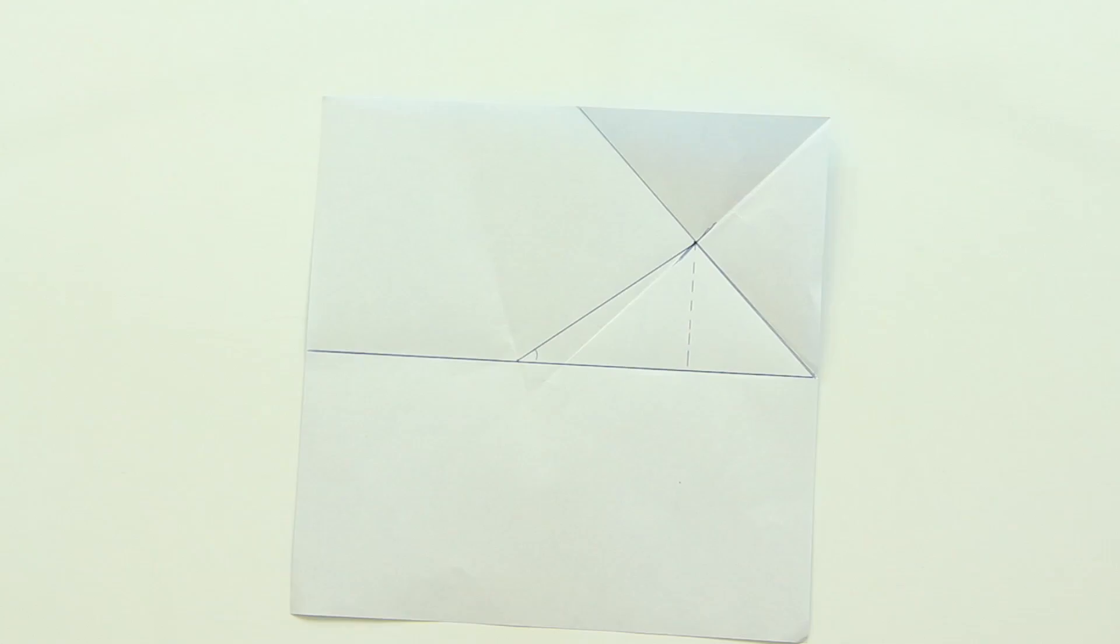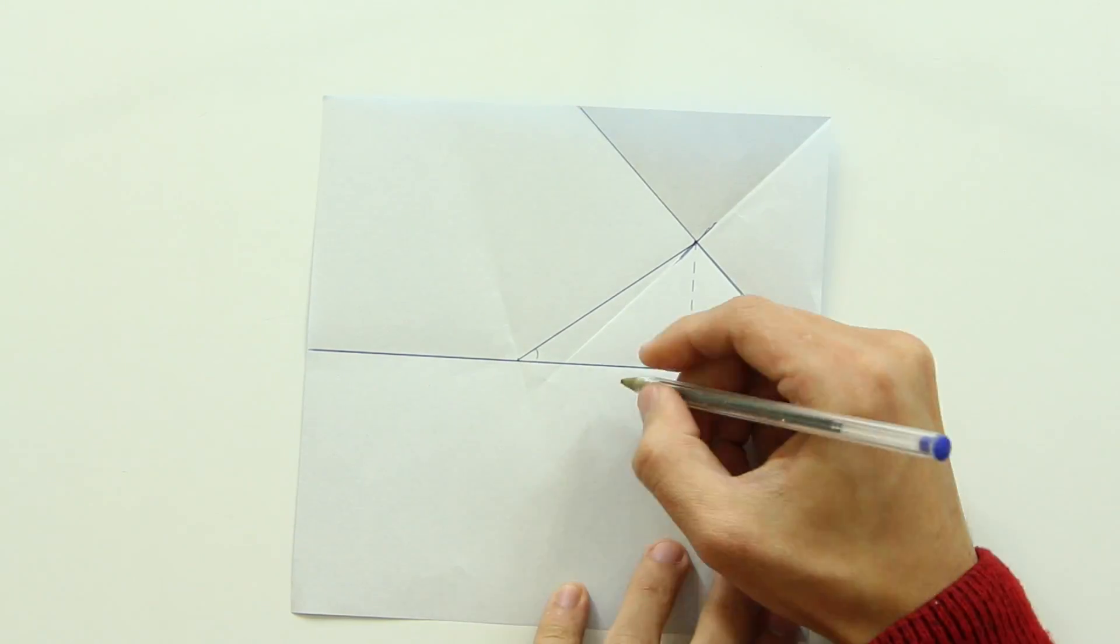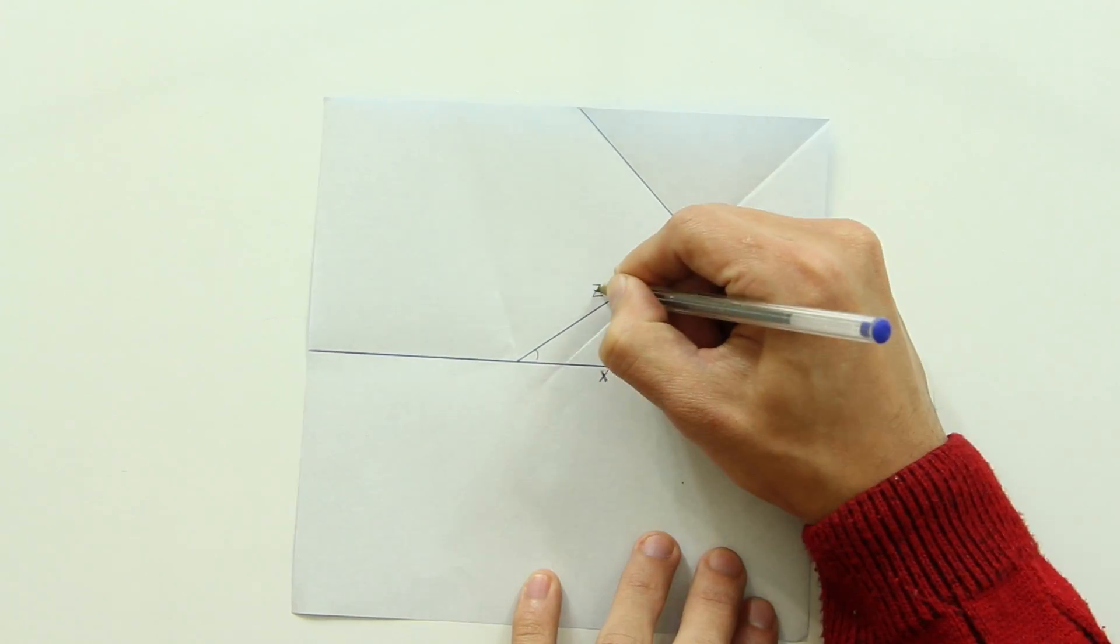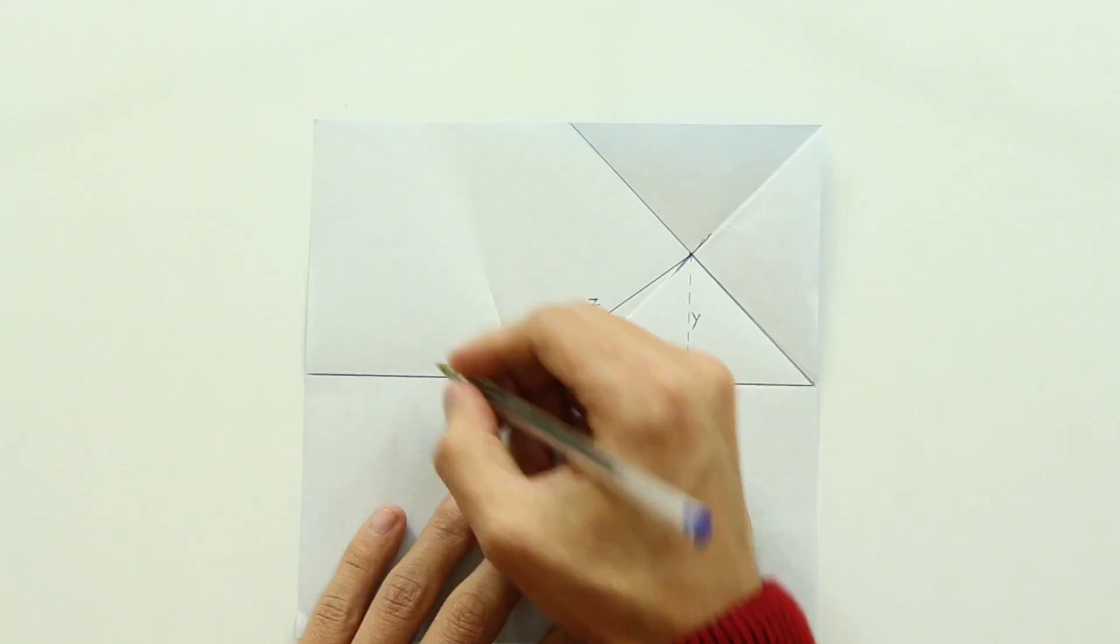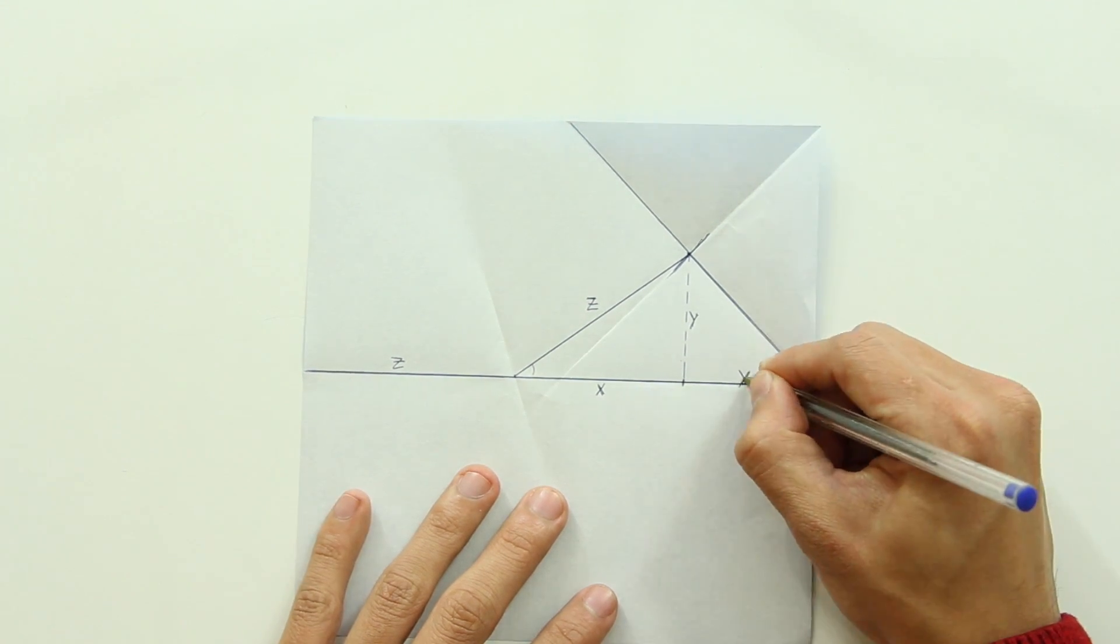I won't show you all the steps to prove it, but you had something like this. Let's call this x, y and z, and you folded this point up to this point. Now call this line here z, and this one y.